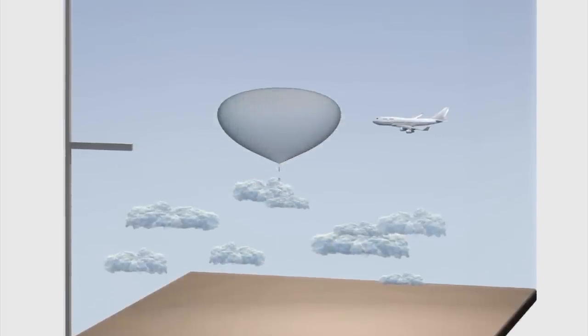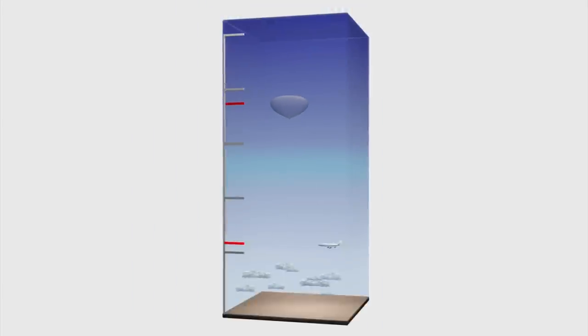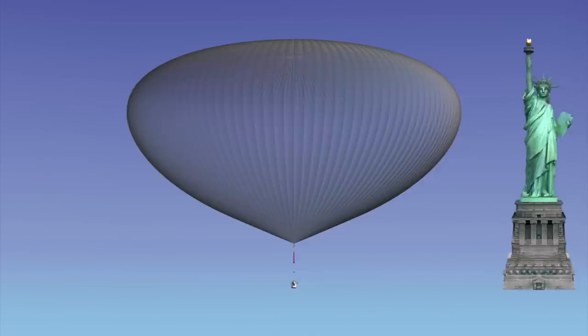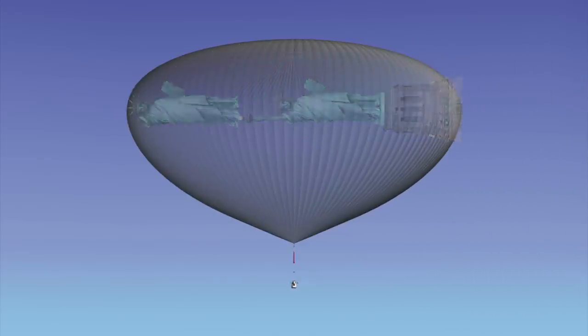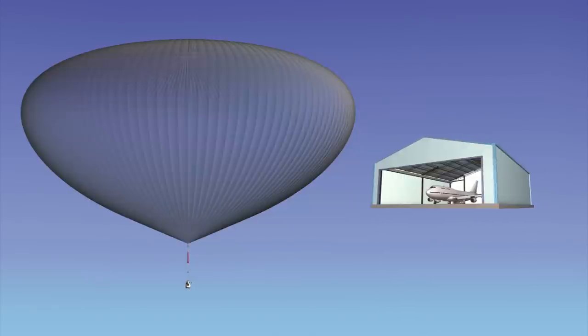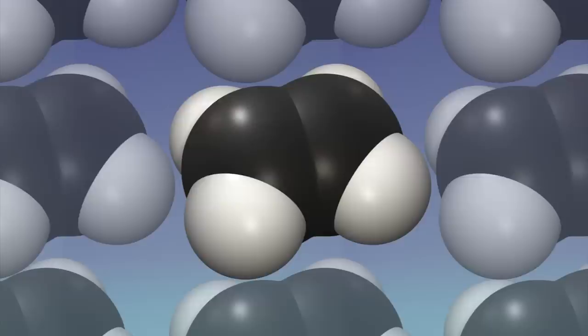The balloon will rise through the troposphere to the outer limits of the stratosphere. At its peak altitude of 120,000 feet, the balloon will measure 424 feet in diameter, or the equivalent of one and a half Statues of Liberty, and 30 million cubic feet in volume, approximately 30 aircraft hangars.